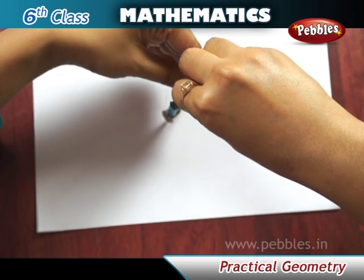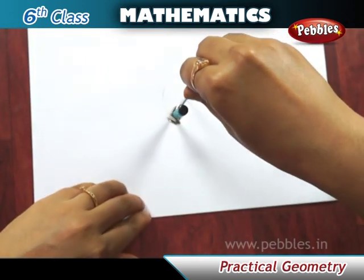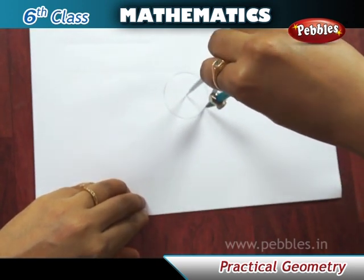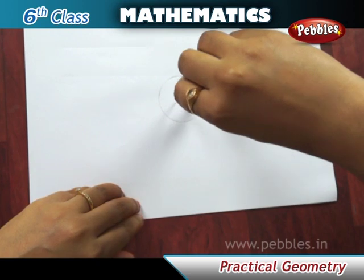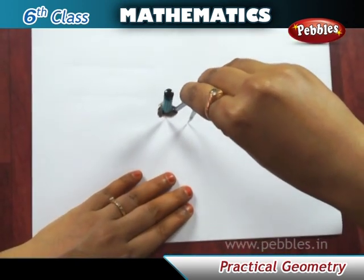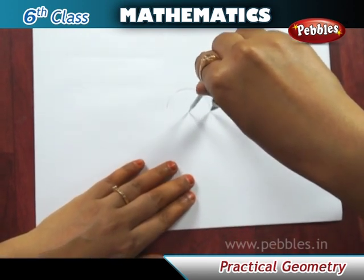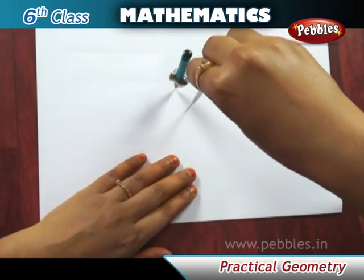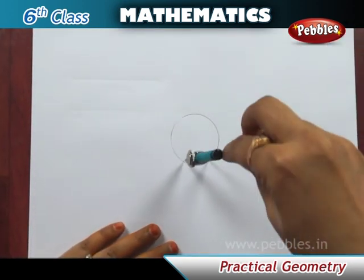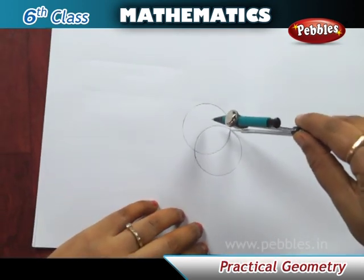Mark a point with a sharp pencil as the center O. Place the pointer of the compasses firmly at O. Without moving the metal point, slowly rotate the pencil until it comes back to the starting point. Your circle with a radius of 3.7 centimeters is now ready.